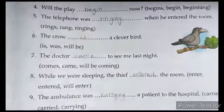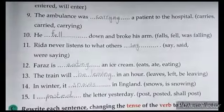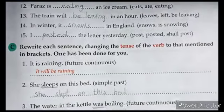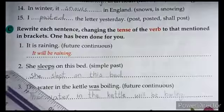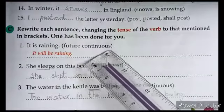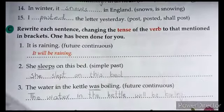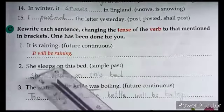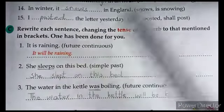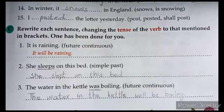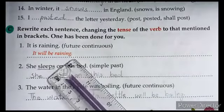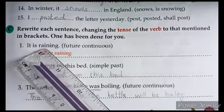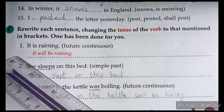Here is Exercise C: rewrite each sentence changing the tense of the verb to that mentioned in the bracket. One has been done for you. Students, whatever tense is given in the bracket, we are going to change the sentence accordingly.